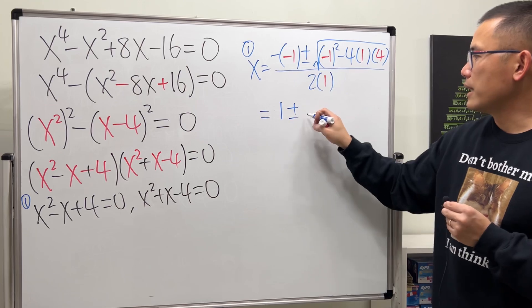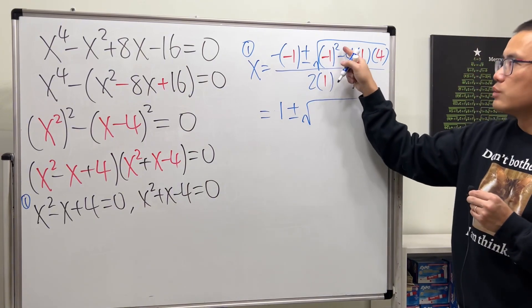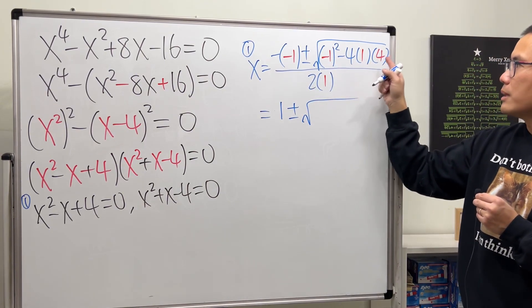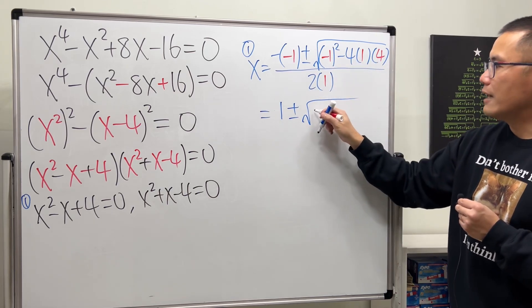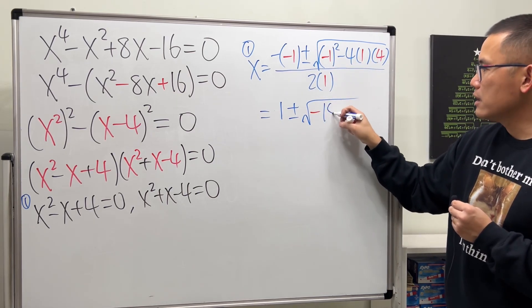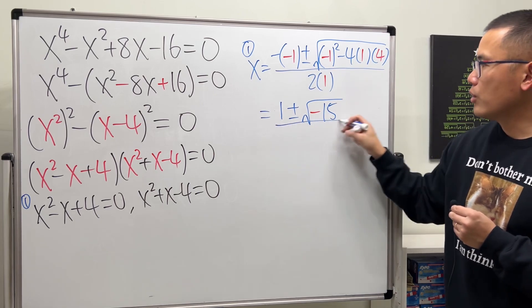This is just going to be 1, and then plus or minus. This is 1, and then 4 times 1 times 4 is 16. 1 minus 16, we have negative 15, and then this is all over 2.